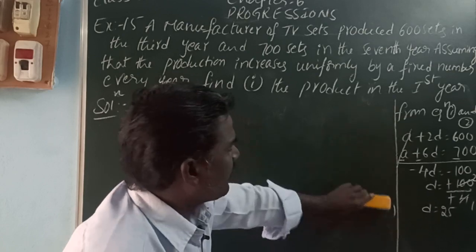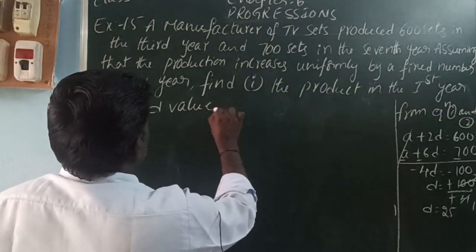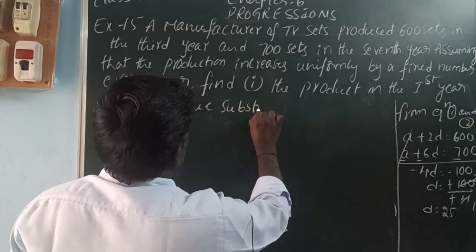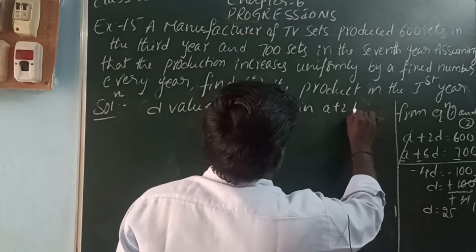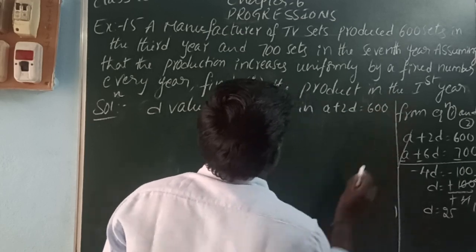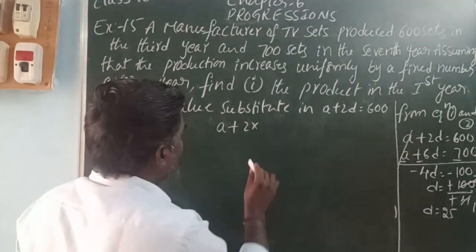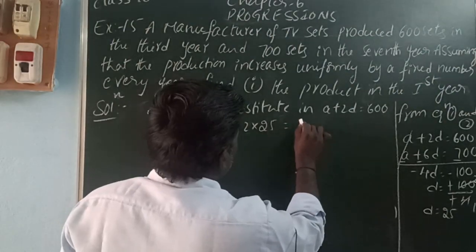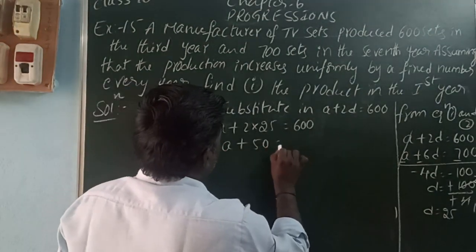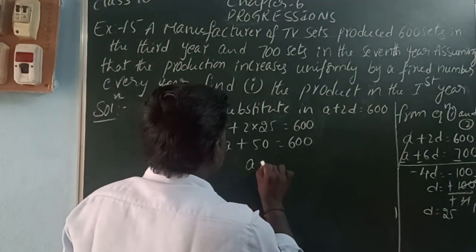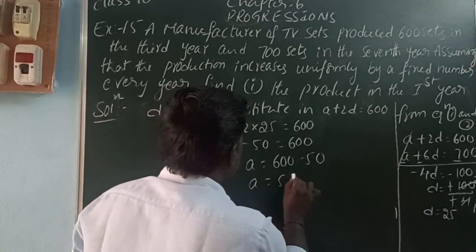Substituting d = 25 into equation one: a + 2(25) = 600, so a + 50 = 600, therefore a = 550. The first term is the production in the first year, which is 550 sets.